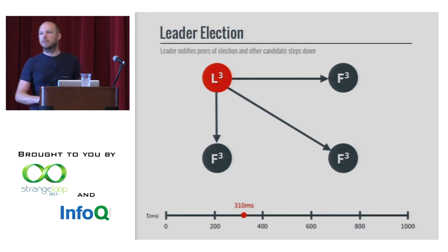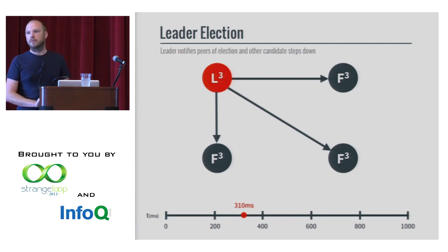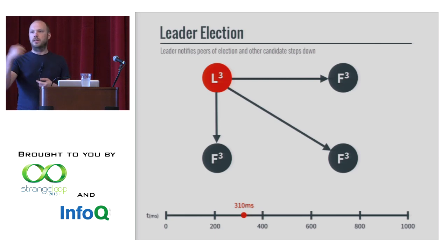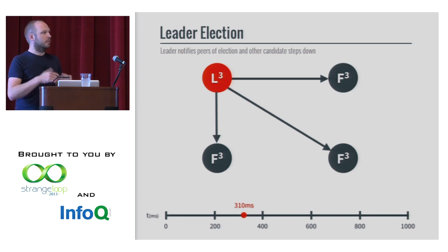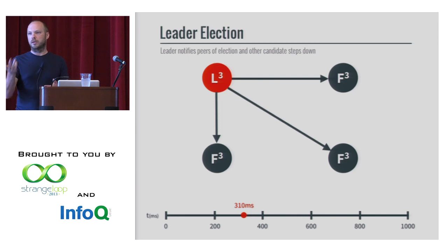Question: are all nodes aware of one another? They're all related in the sense that they act independently unless they hear from a leader, in which case they just keep following whatever leader they have until the timeout. If they don't hear anything, they become a candidate and then hopefully a leader. They're fairly isolated and independent until they need to step up.